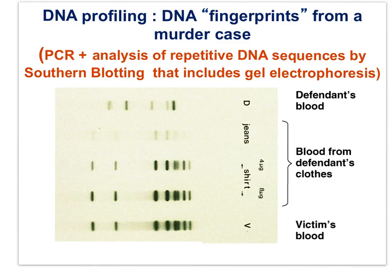Here is an image of the nitrocellulose paper used in southern blotting, where the paper has blotted a gel. The information here will be used in a forensics investigation — a murder case. You can see that the DNA collected from the defendant's clothes match the victim's blood.